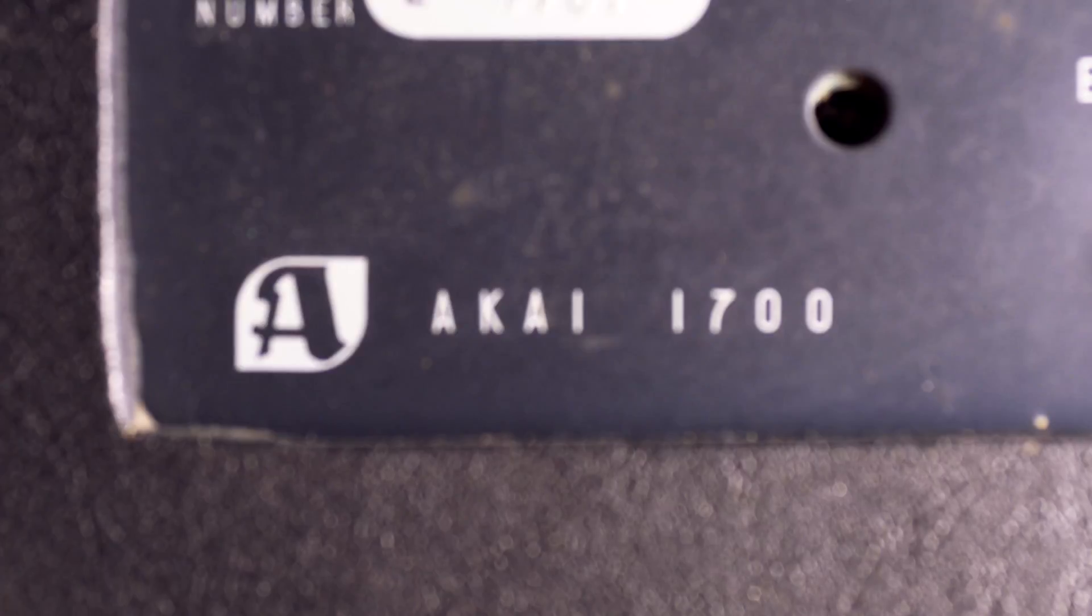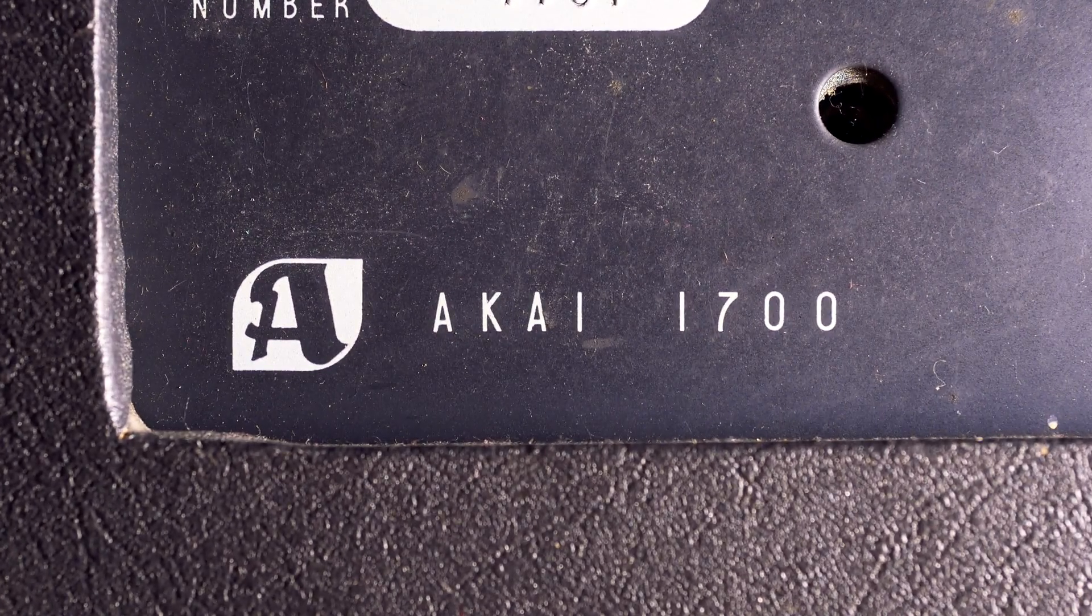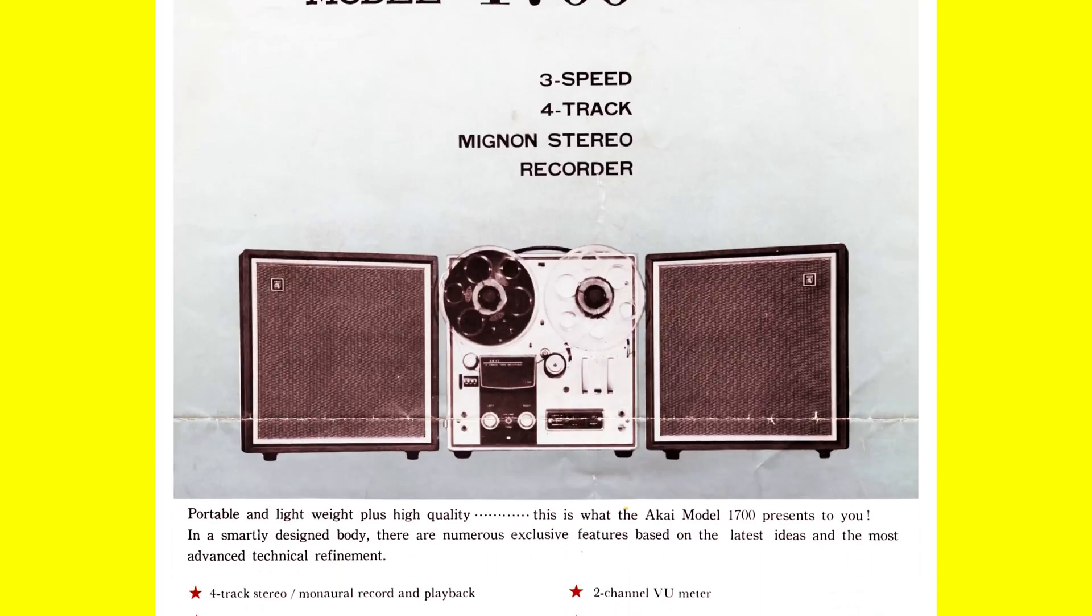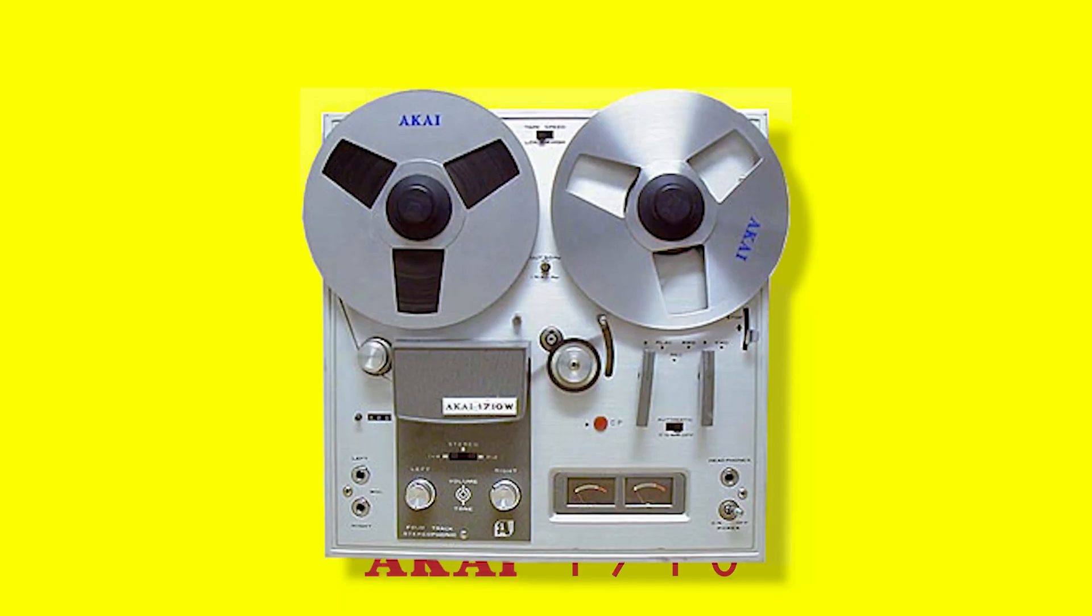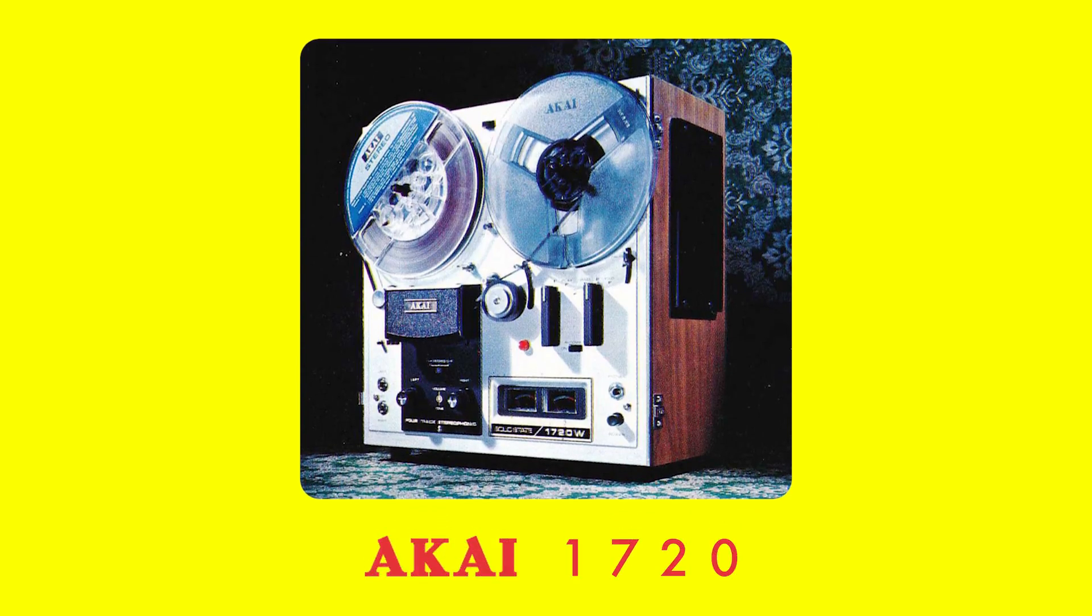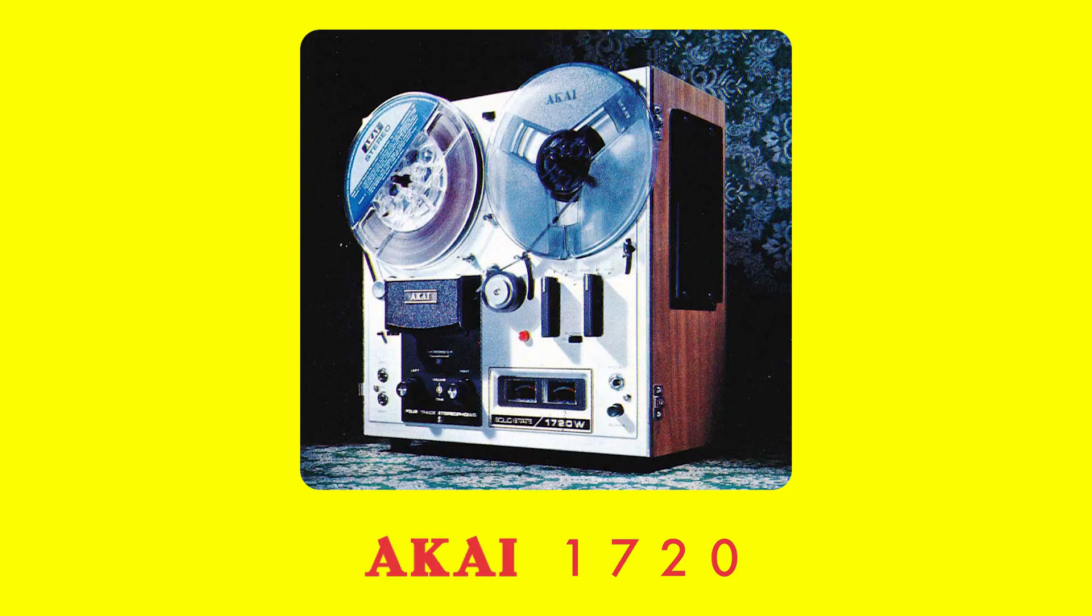This machine was made near the end of the tube amp era, and is actually one of the last reel-to-reel machines made with tubes. While it is pretty hard to find information on these machines, I can tell that the next model after the 1700, the 1710, uses a combination of semiconductors and tubes, and the model after that, the 1720, has phased out tubes entirely.